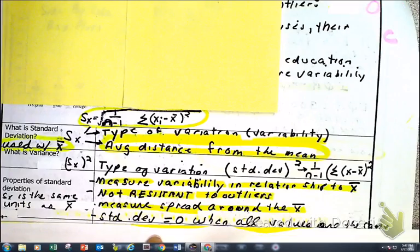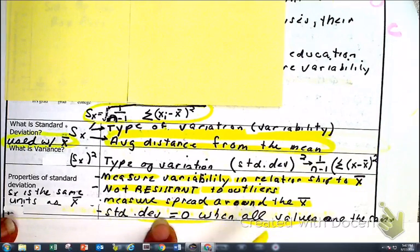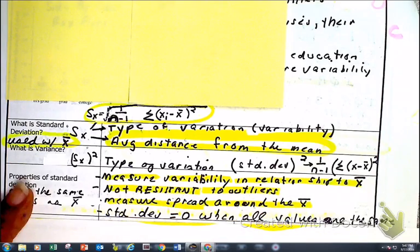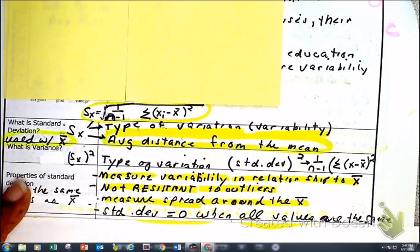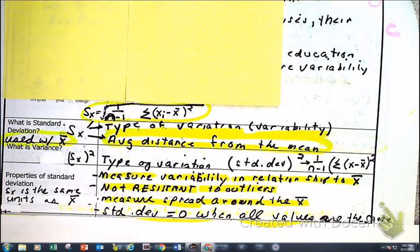Here's something interesting: if we have a standard deviation of zero, that means we have all the same values. So if I took a group of 16-year-olds and tried to find out their average age — it's going to be 16. How much variability is there? None. They're all 16.